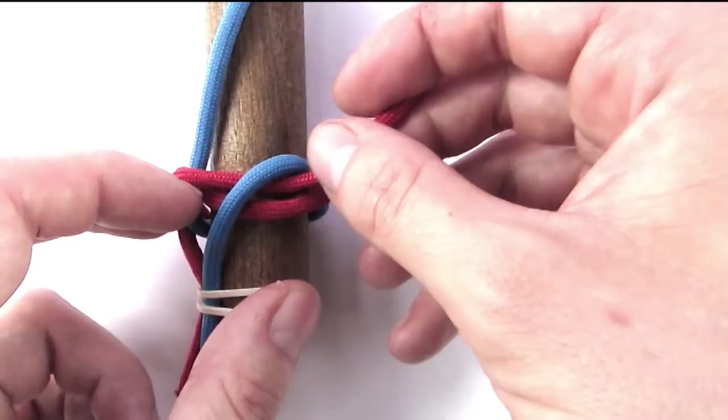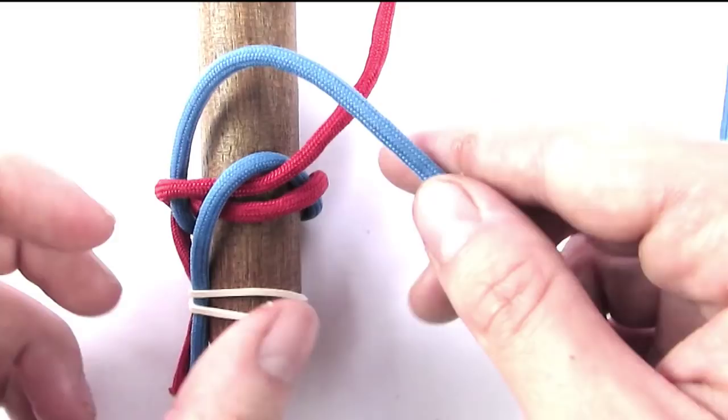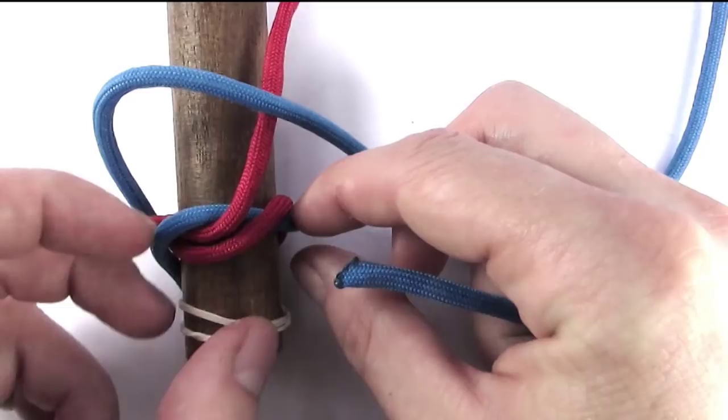I'm now going to take my left cord again, which is the blue one this time. Place it over my cord to the right and then feed the end through the twist on the right, just like before.